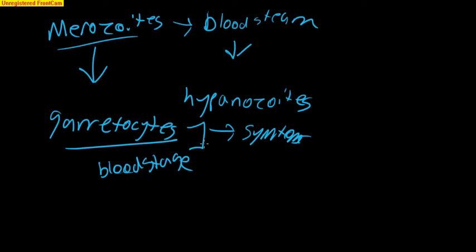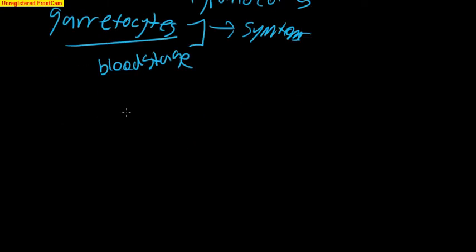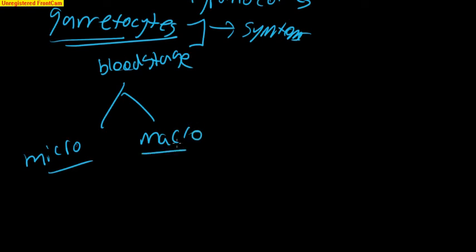They start producing micro-gametocytes and macro-gametocytes. So what happens is, I'll go ahead and write that down. So from here, these are simply capable, right? So this is the blood stage of the malaria that's capable of producing gametes. And it can produce two different types: micro and macro-gametocytes. I'm not going to write the end part. Now, the macros are the female and the micros are the male.